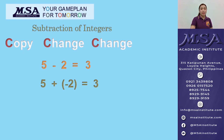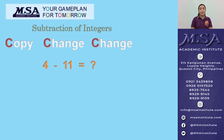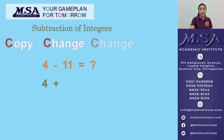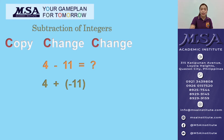I will apply the copy, change, change rule in subtracting integers. We have 4 minus 11. Copy the minuend, change the operation from subtraction to addition, and then change the sign of the subtrahend from positive 11 to negative 11. So we have 4 plus negative 11. They are unlike signs, so get the positive difference: 11 minus 4 gives you 7. Copy the sign of the addend with the larger absolute value — that is negative 11 — so the sign of the sum must be negative 7.